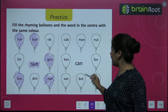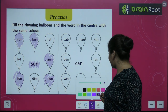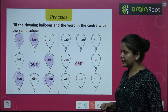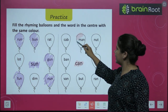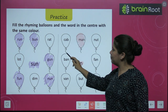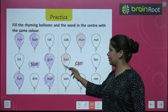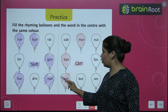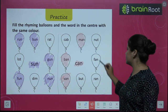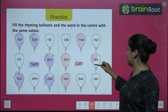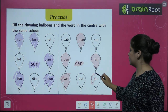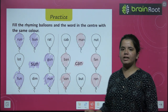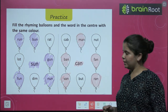Next we have 'can'. Can's rhyming words: man, van, fan, and ran. So this is how you will beautifully color in your book.